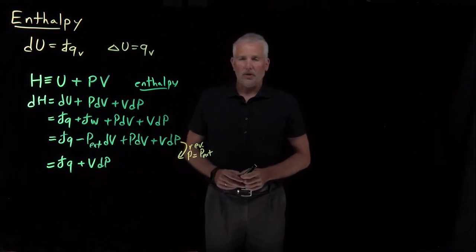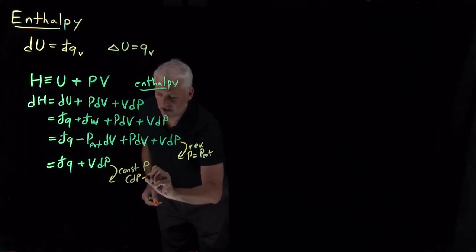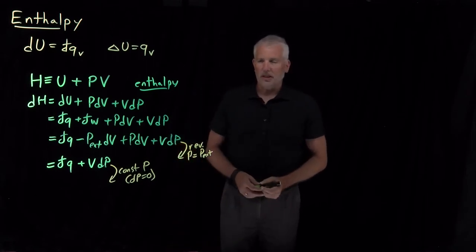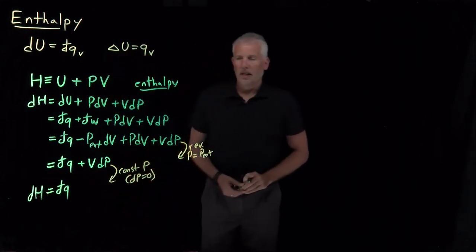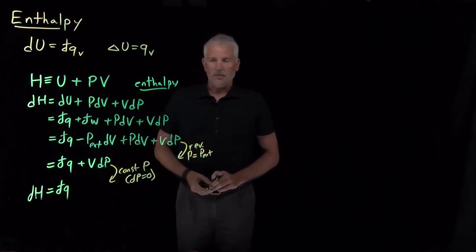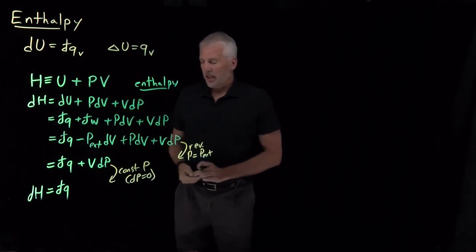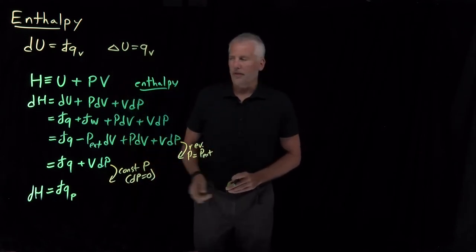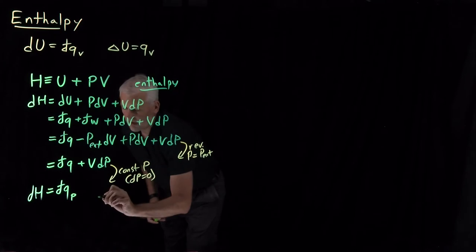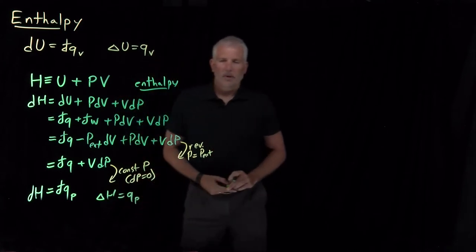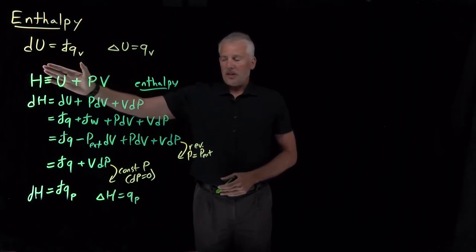Now we're at the point where we can do what I promised. If we're under constant pressure conditions, any change in pressure is zero — dP equals zero — so that second term goes away. What we're left with is the statement that the change in enthalpy equals the amount of heat transferred. This is the equivalent of the earlier statement that internal energy equals heat under constant volume conditions. Under constant pressure, the change in enthalpy equals heat, expressed either in differential form or for finite changes.